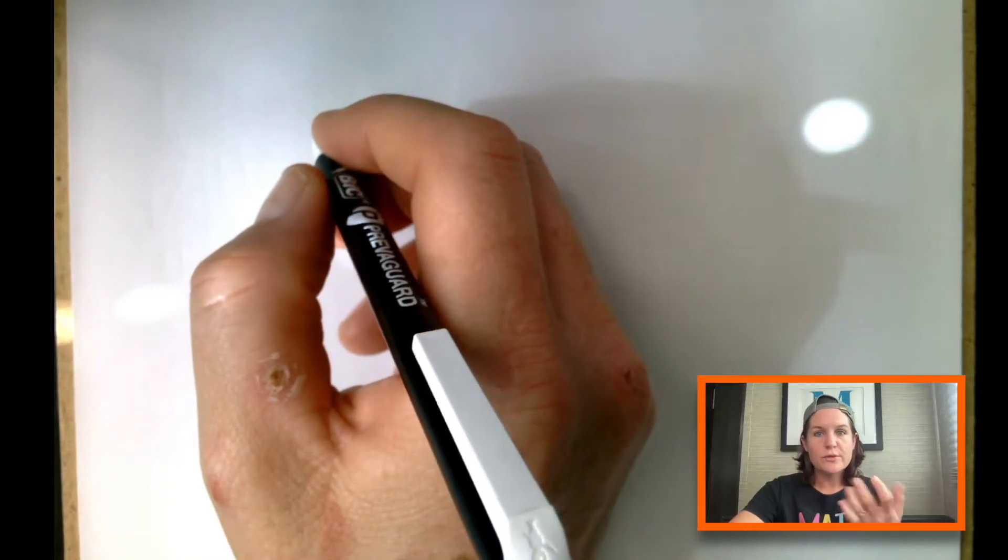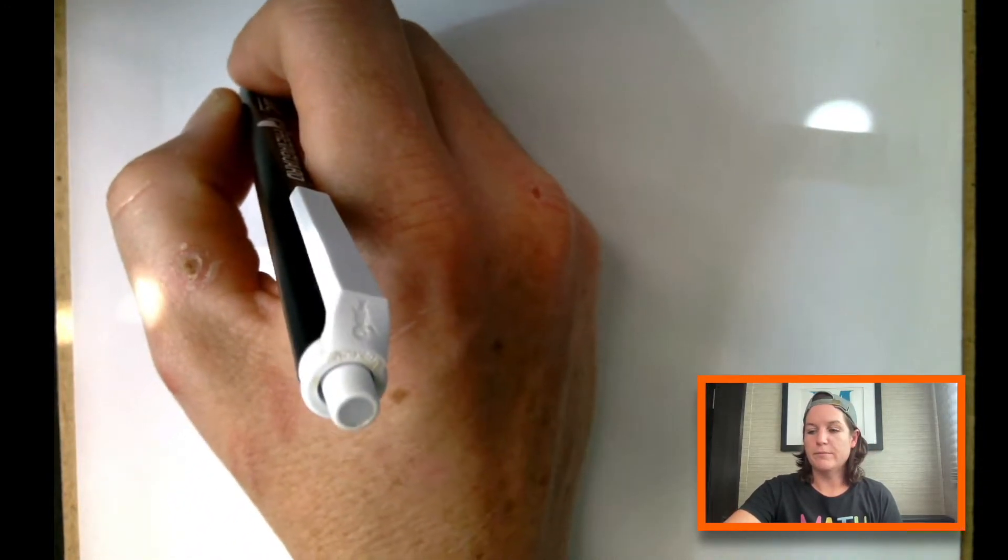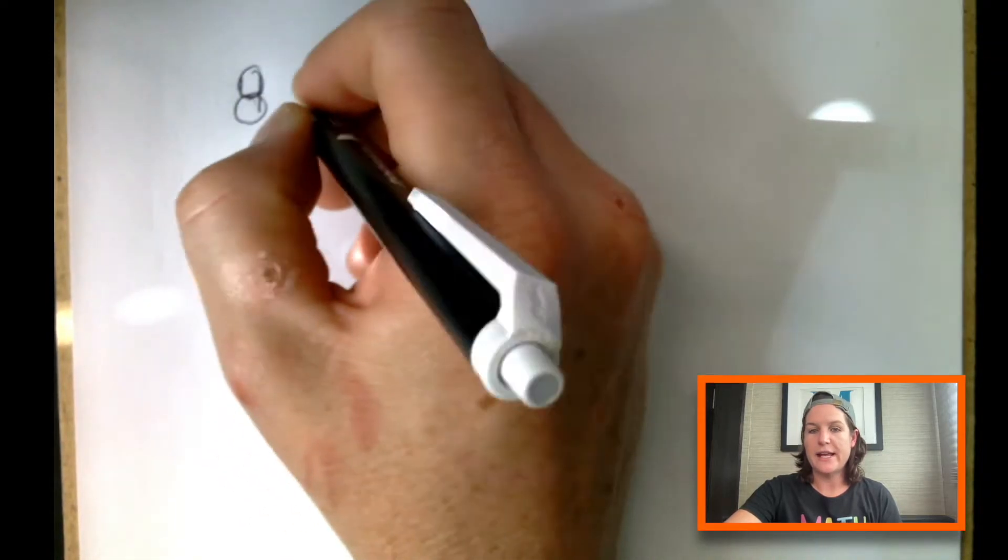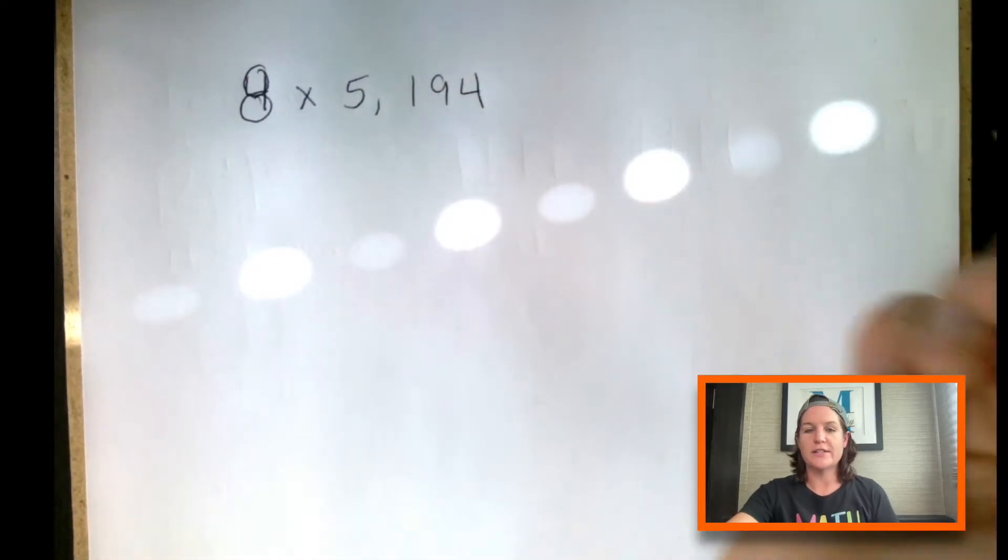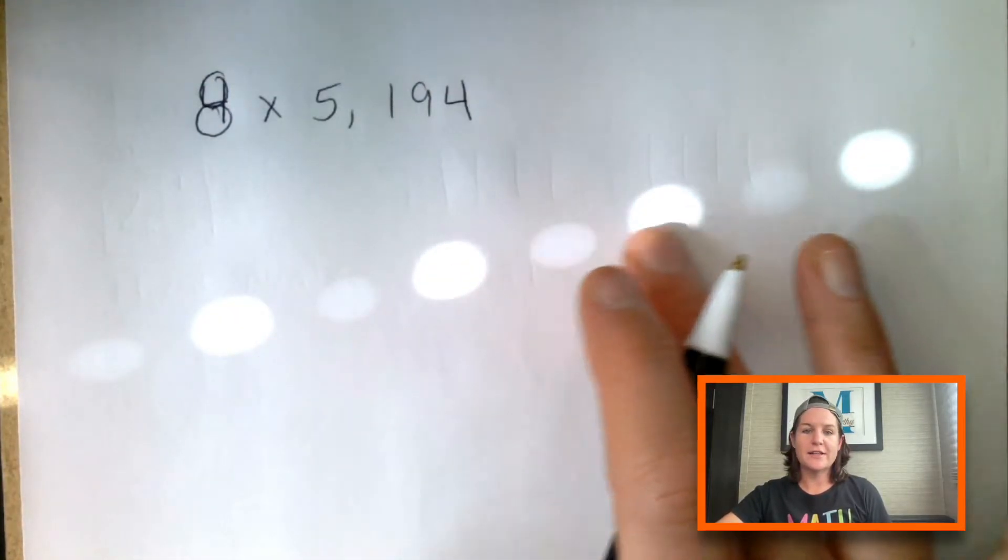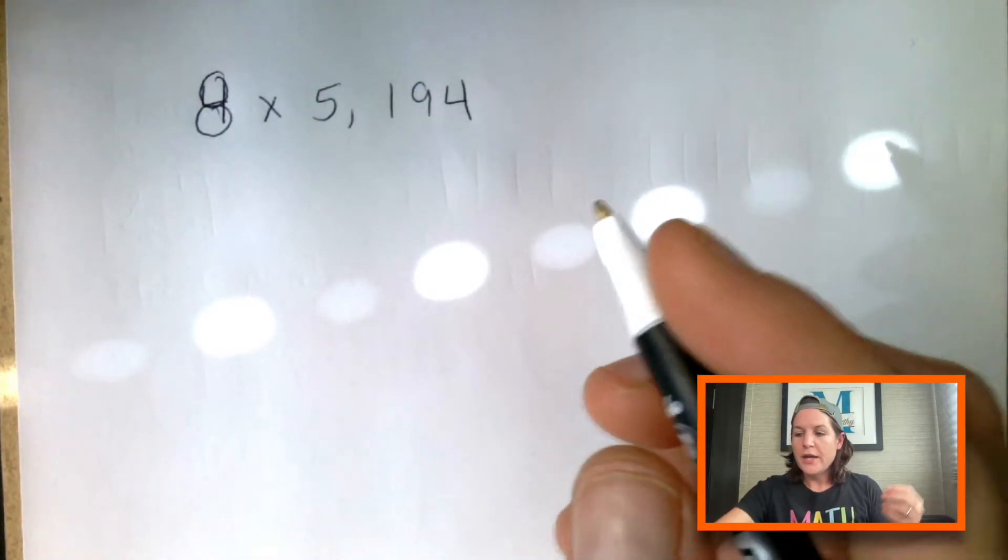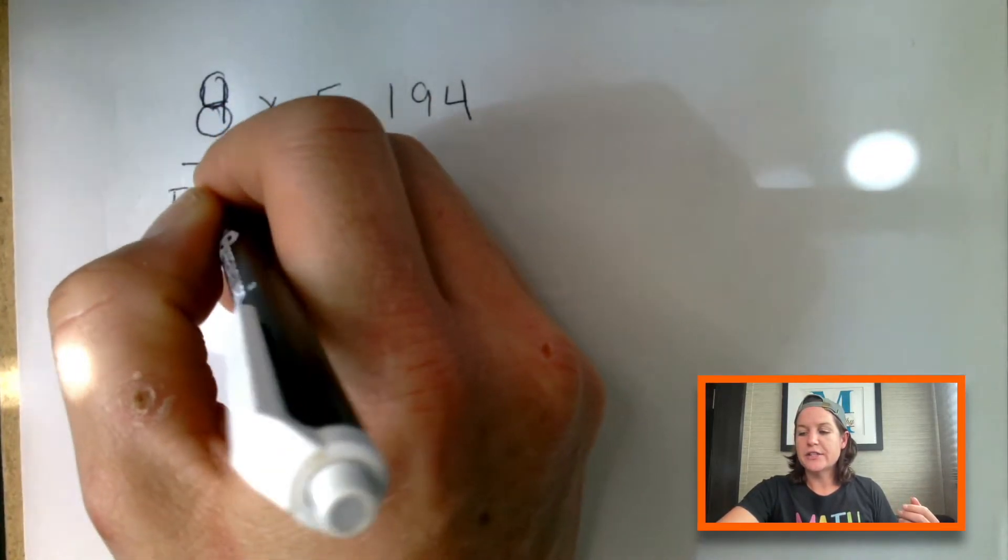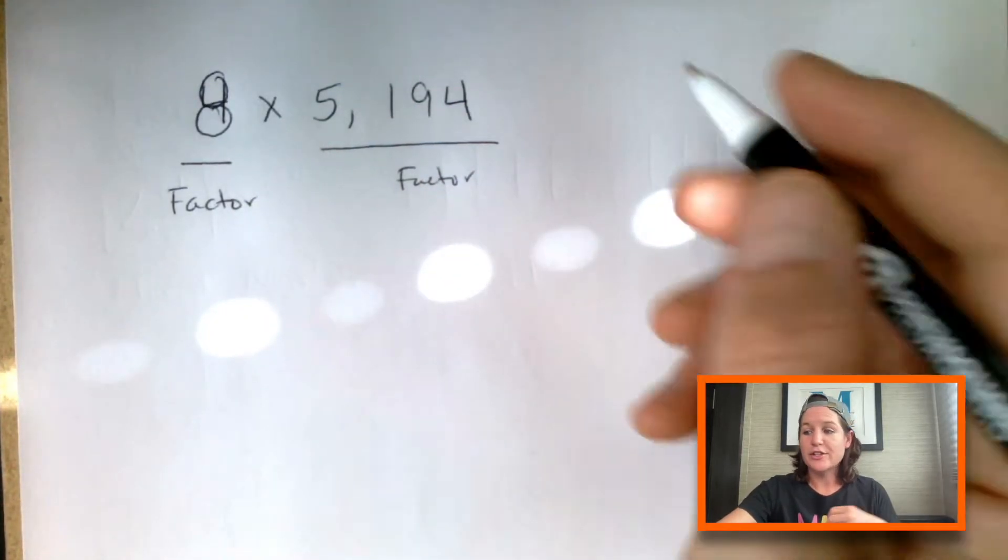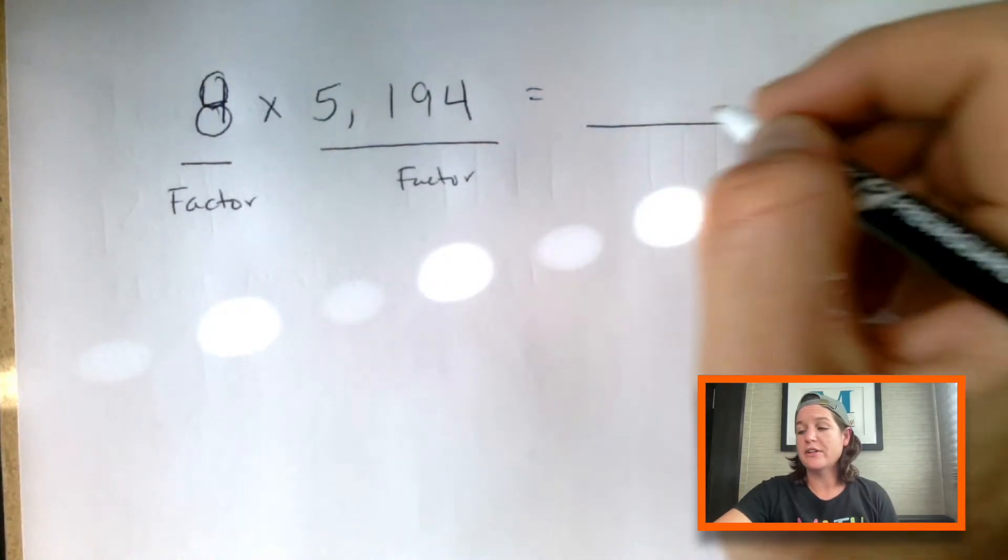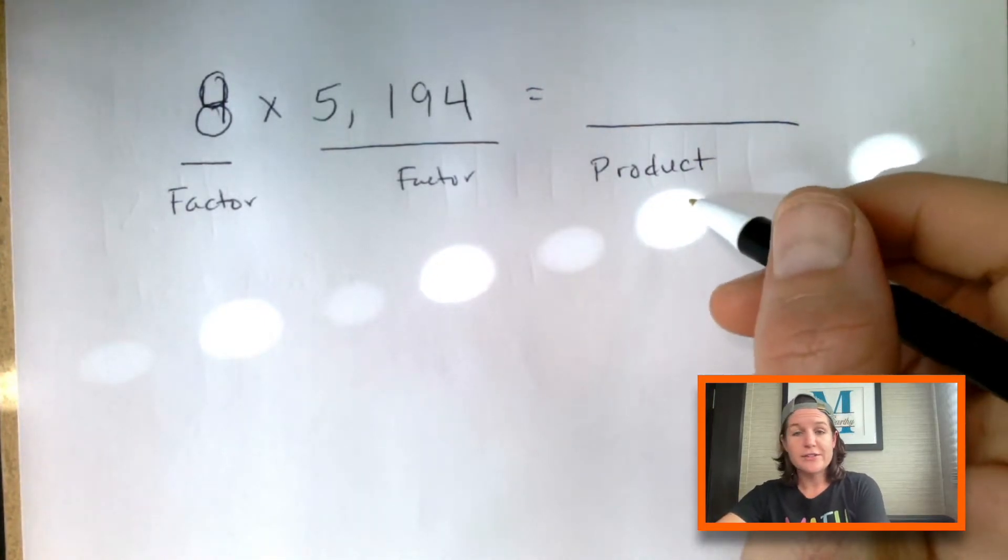So let's do this. In fourth grade, students might see a problem like this. Let's say, actually I'm going to change that to an eight. Let's make that eight. We've got 8 times 5,194. Let's solve that first. And I apologize for the little lights on the paper. I'm getting a weird angle of glare. It is what it is. So what we have here, we have something called a factor here, and we've got a very large factor here. And a factor times factor equals what we're trying to figure out, which is called the product. The product is the combined amount or the total.